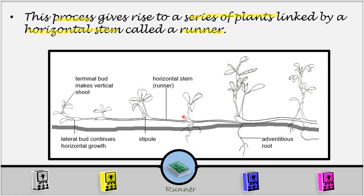So, this is the horizontal stem, or what we call the runner, and here we have the terminal bud. The terminal bud makes the vertical shoot. So, after the terminal bud is done like this, it will make a vertical shoot, and then it goes up. Now, the lateral bud continues horizontal growth. Here we shall have the growth continuing horizontally.